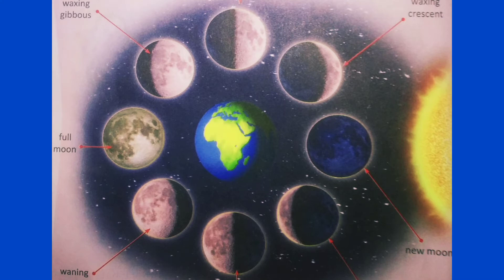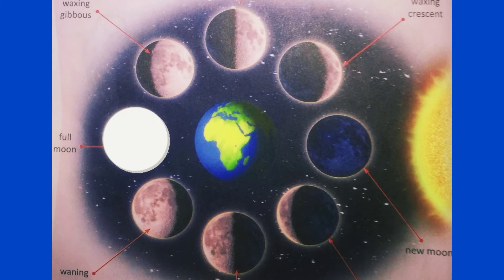This new moon occurs once a month. After the new moon, we begin to see the moon little by little. Then comes the full moon, when the moon appears fully lit up to us on earth. The earth is located directly between the sun and the moon during the full moon.